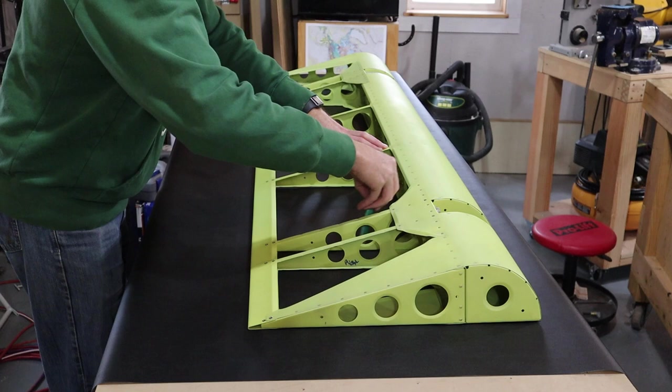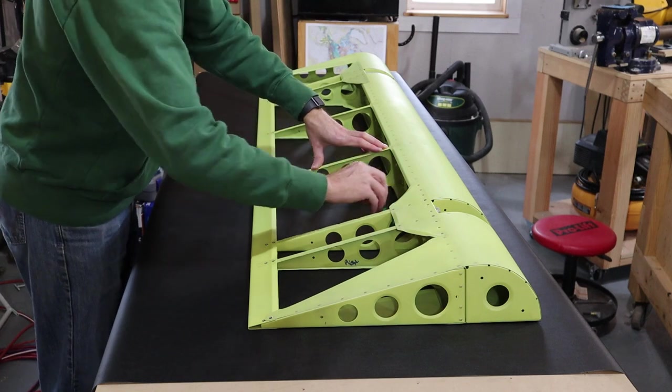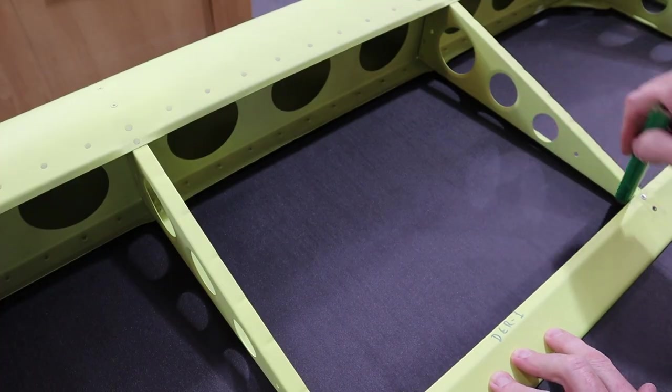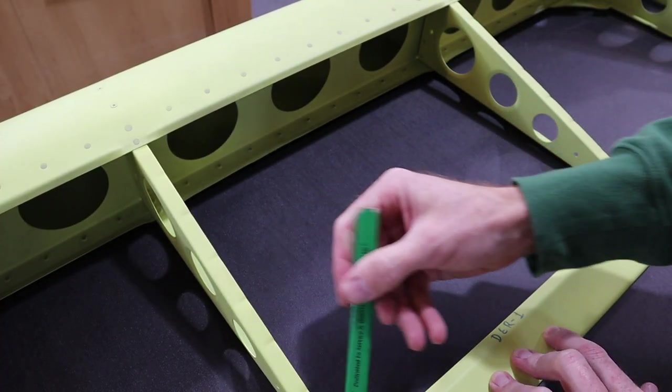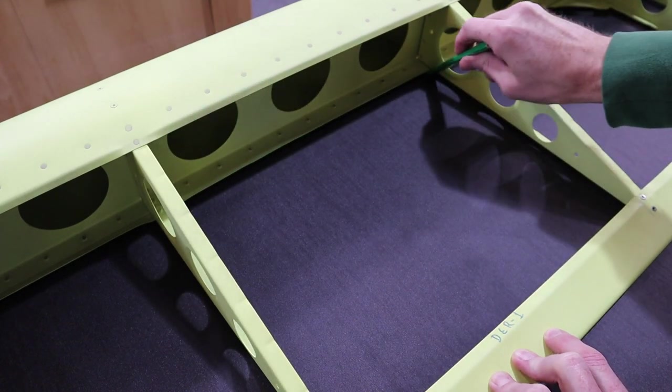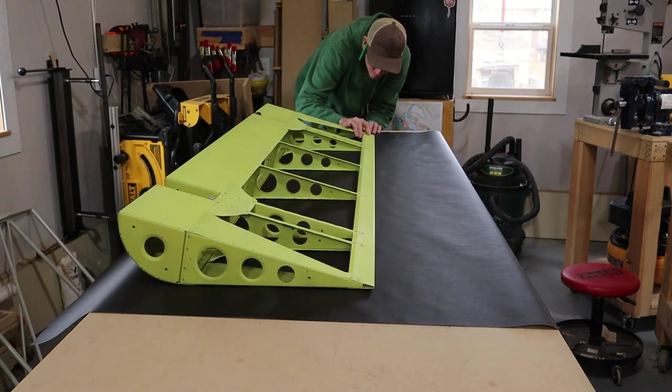Once the ailerons were ready to be covered, I laid them out on a piece of fabric and marked them everywhere they would touch to be glued. Since the trailing edge is a nice straight edge, we could use one piece of fabric and have the overlapping seam on the leading edge.